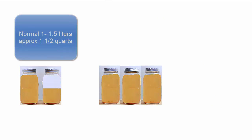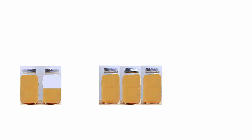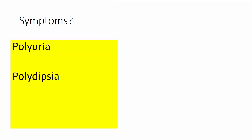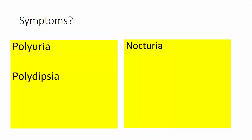Normally, urine output is approximately a liter or a liter and a half in a day. With central diabetes insipidus, the patient loses three liters or more of urine in a day — sometimes as many as 25 or 30 liters in a 24-hour period. The symptoms of polyuria and polydipsia are quite obvious. The patient will also wake up at night to urinate, which is called nocturia, and of course the loss of a lot of fluid from the body can cause dehydration and even low blood volume.